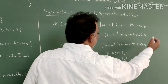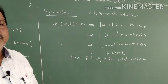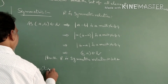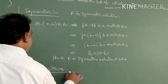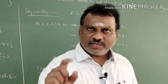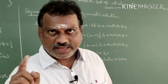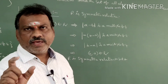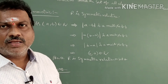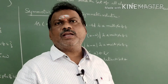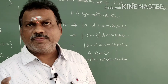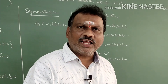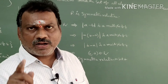Now we check the transitive relation on set A. Transitive means if (a,b) and (b,c) both belong to R, then (a,c) must also belong to R. If ordered pair (a,b) belongs to that relation, mod of a minus b is a multiple of 4.